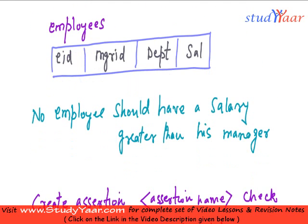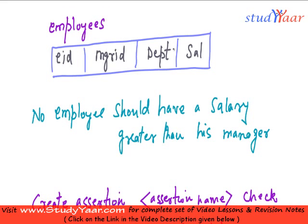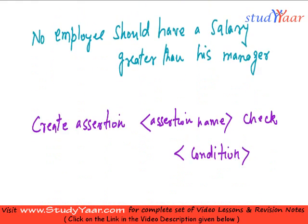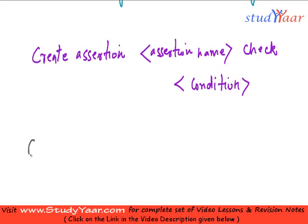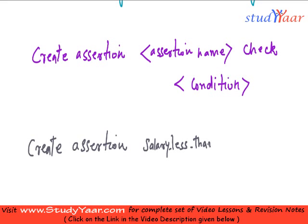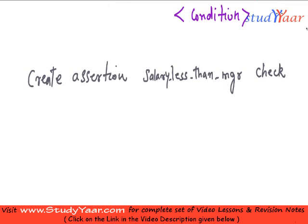As an example, we are going to create an assertion on the employees table such that we never have an employee with a salary greater than his manager. I am going to say CREATE ASSERTION with the name salary_less_than_manager, then the keyword CHECK, and now I am going to specify my condition. We normally specify the condition by using the NOT EXISTS keyword.